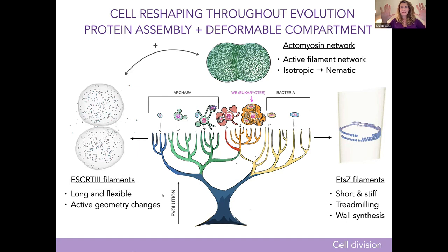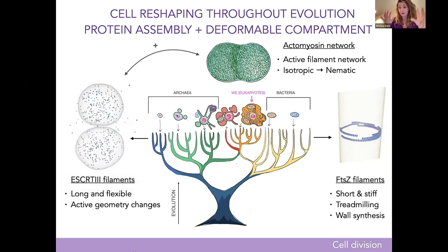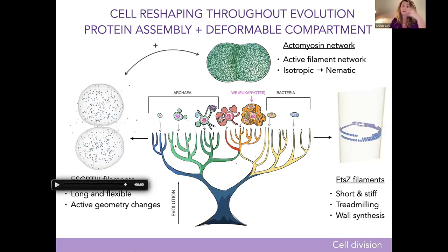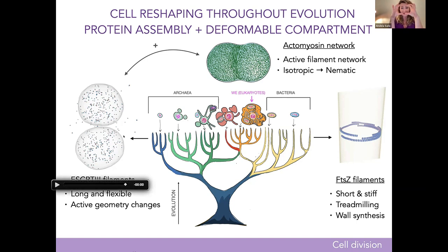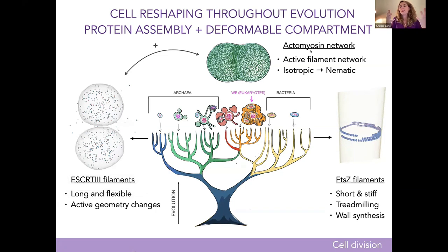At some point the two prokaryotic branches merged into a symbiotic organism that eventually gave rise to eukaryotes. Archaea most likely grew around other archaea and bacteria; bacteria became our mitochondria, and archaea gave us our outer membrane and cell nucleus. We as eukaryotes still use ESCRT-III filaments to split the cell when it's squished to about one micron — the size of a typical archaea. But because the symbiotic organism is much bigger, it invented an additional mechanism: an actomyosin network, a network of active filaments with an isotropic contractile transition in the middle that squishes the cell.